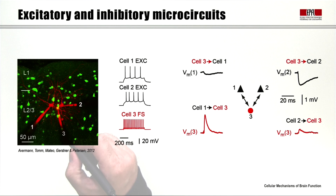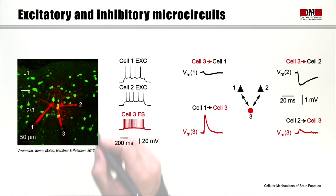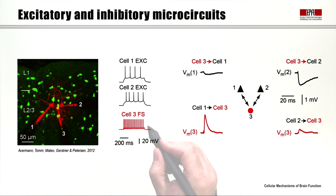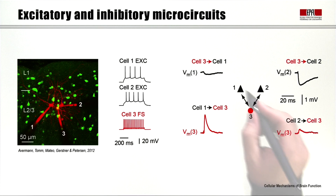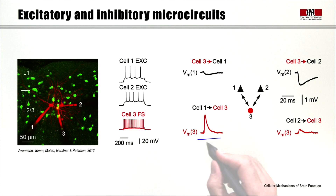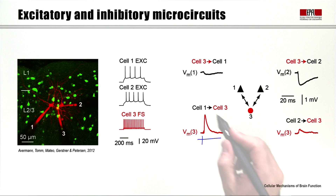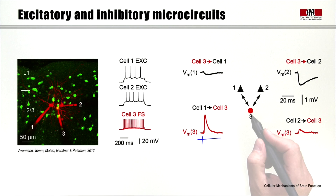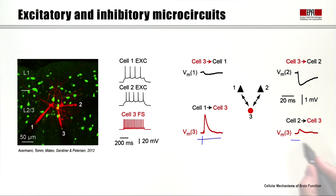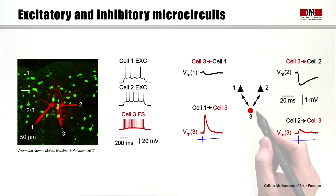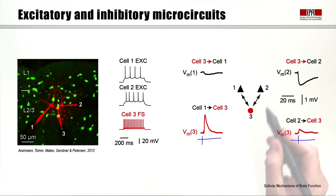Recording electrode 3 is on a cell that appears yellow — a superposition of red from the recording electrode and green fluorescent protein — indicating a GABAergic neuron. Upon injecting current into it, we see that it's a parvalbumin fast-spiking GABAergic neuron. Evoking an action potential in cell 1 causes an excitatory postsynaptic potential in our fast-spiking GABAergic neuron (cell 3), while cell 1 does not connect to cell 2. Firing an action potential in cell 2 also causes an EPSP in cell 3, so both excitatory pyramidal cells provide input onto the fast-spiking parvalbumin GABAergic neuron.